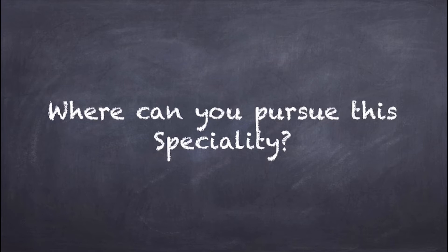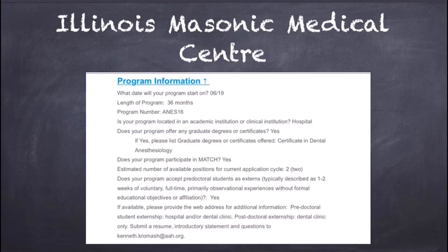For example, if you did a one-year GPR course in Virginia and also want to practice in Texas — which requires a two-year specialty — you can apply to this one accepting school after your GPR. Your CV would be even more polished because of the GPR, and after completing the certificate you can apply in Texas as well, giving you two states to practice in. That school is the Illinois Masonic Medical Center. The interview is virtual and the program length is 36 months — about three years.